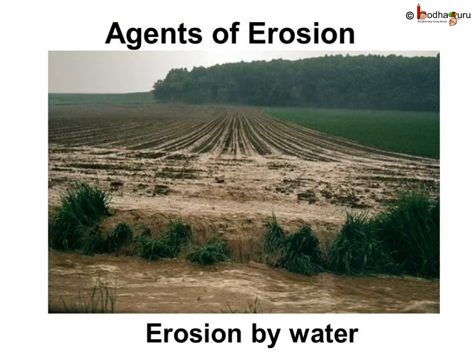In the absence of vegetation, water also washes away soil particles. Soil erosion by water is most common in hilly places, where rivers carry the topsoil down the slope. This soil is deposited in plains by the river. When the soil deposit increases, the river is forced to change its course and flow on land, thereby causing floods.